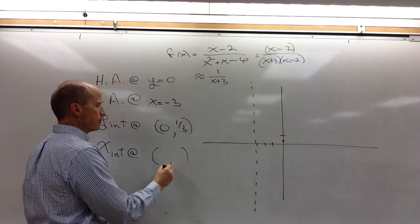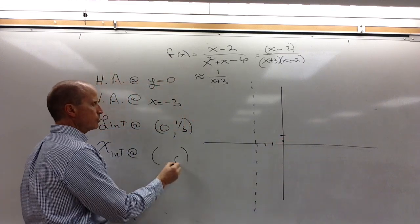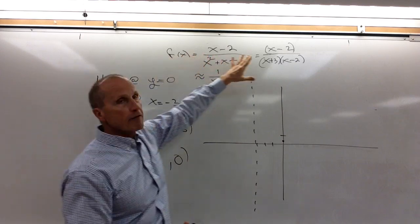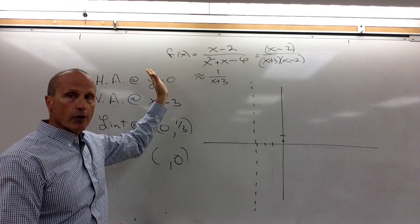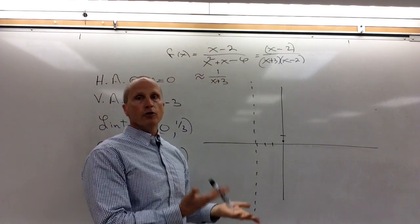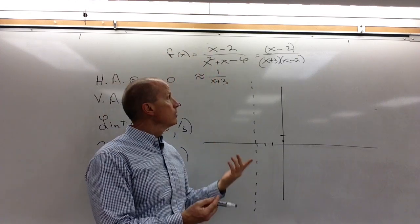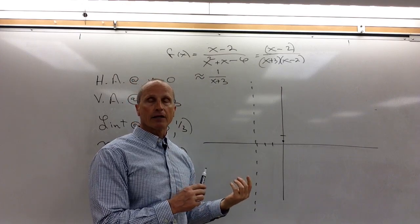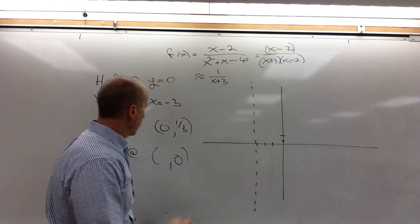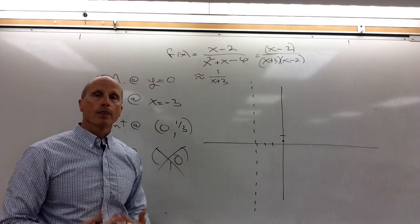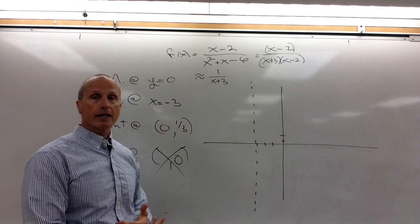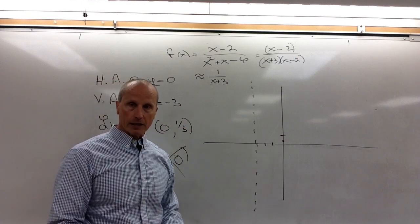That point x = 2 is still not in the domain, so the graph won't exist there — we just don't have a vertical asymptote. The y-intercept — put 0 for x — gives (−2)/(−6) = positive one-third, so it's crossing the y-axis about right there. The x-intercept — set the numerator to zero — x = 2 makes the numerator zero. However, we must remember that 2 is not in the domain, so x can never equal 2, and therefore we will not get an x-intercept. This graph will never cross the x-axis.